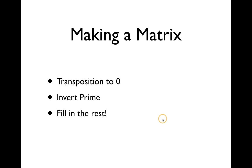There are three steps to making a matrix. The first step is transpose your prime form to start on zero and write it on the matrix. The next step is to invert prime and the third step is to fill in the rest.